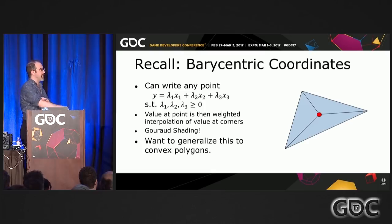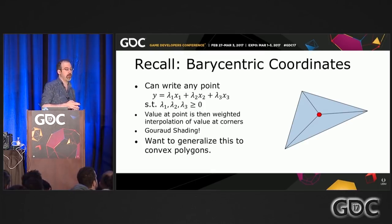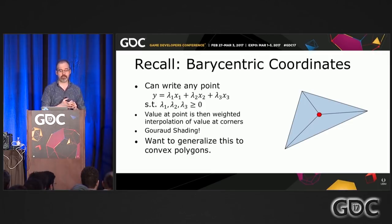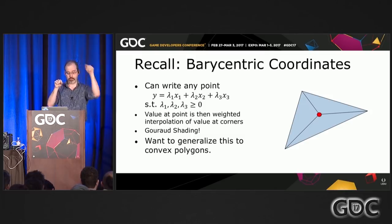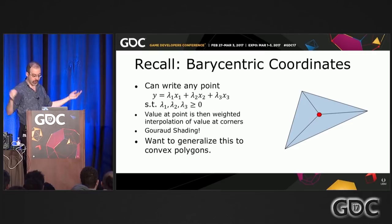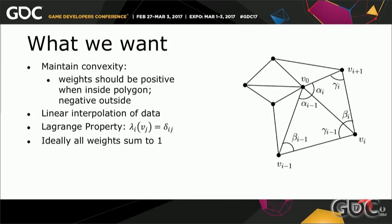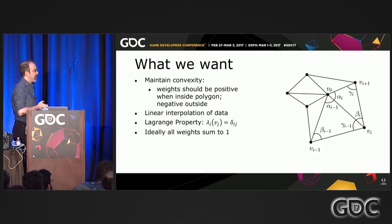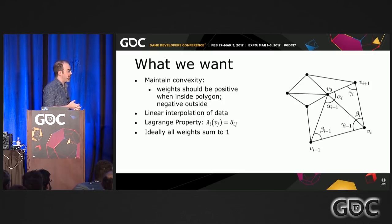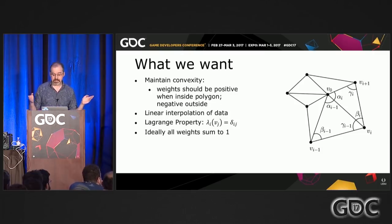We would like to generalize this to larger classes of polygons — convex polygons, star-shaped polygons, or even simple polygons in the plane. A star-shaped polygon is one where there is a central point you can reach via a straight line from any other point without crossing the boundary. We'd like to maintain the convexity property — weights positive inside, negative outside — smoothly interpolate data like colors, satisfy the Lagrange property that at a vertex only one weight equals one and the rest are zero, and ideally all weights sum to one.